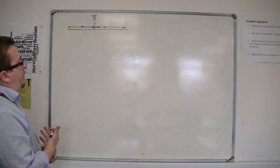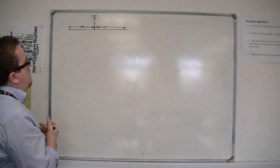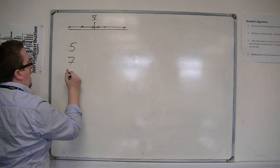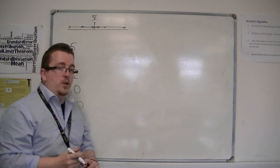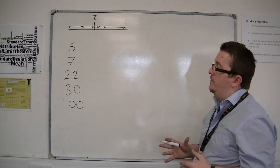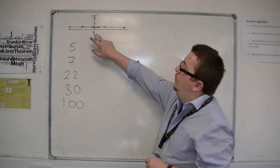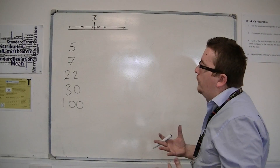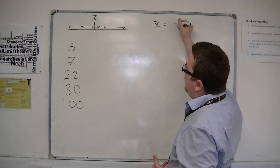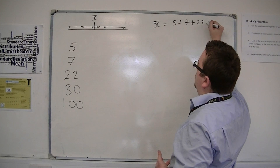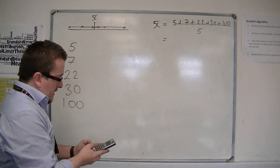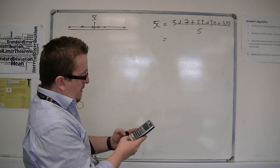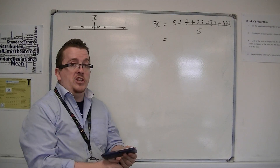So let's say I've got some data. Let's say I've got the numbers 5, 7, 22, 30, and 100. And I want to find the standard deviation of these five numbers. The first thing we do is find the mean. So x-bar is going to be 5 plus 7 plus 22 plus 30 plus 100, and then I'm going to divide that by 5 — how many there are. So 5 plus 7 plus 22 plus 30 plus 100, divided by 5, gives us 32.8.